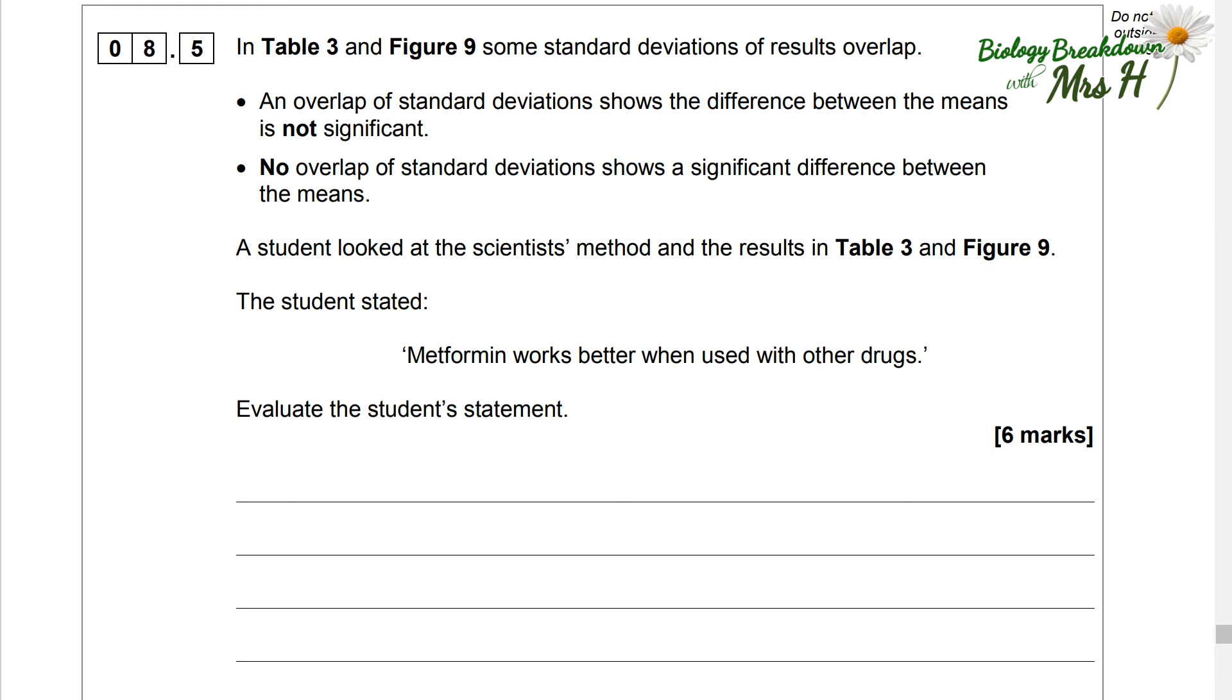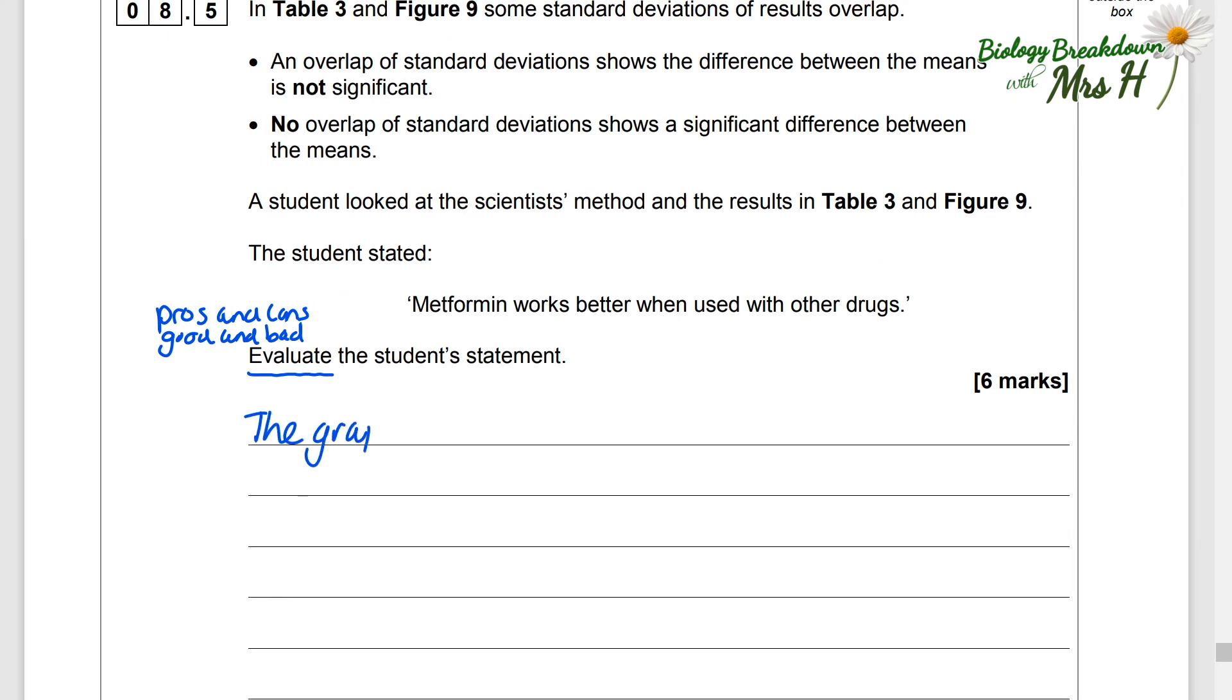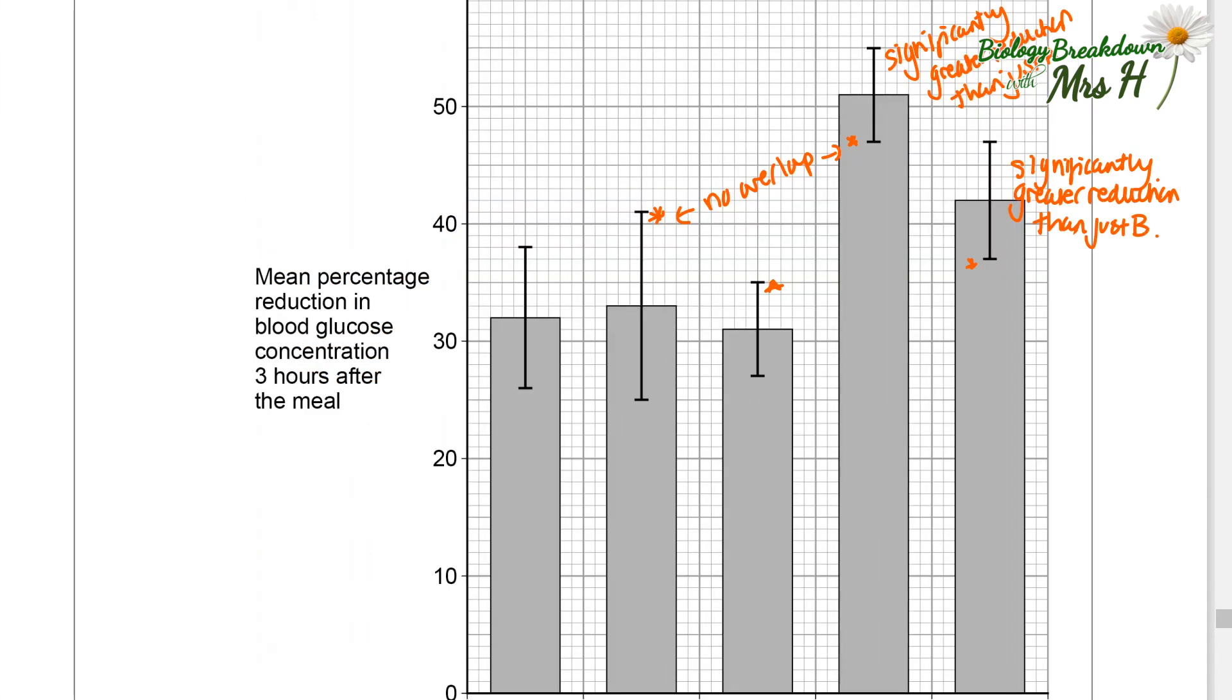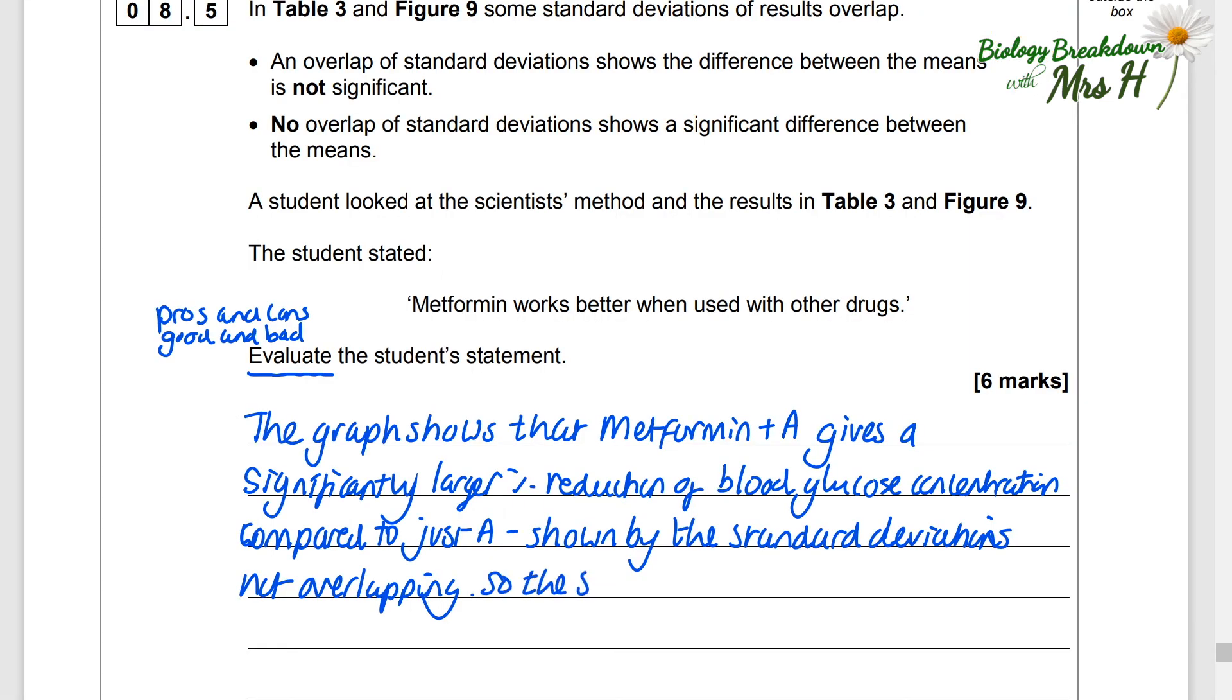Evaluate the student's statement. When you see the word evaluate, you must write some pros and cons, good and bad. The graph shows that metformin plus A gives a significantly larger percentage reduction of blood glucose concentration compared to just A. And you can see that shown by the standard deviations not overlapping. So the statement is supported. Also, metformin plus B gives a significantly larger percentage reduction than B alone. So the statement is supported.